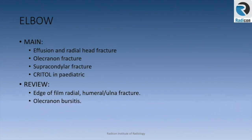Let's summarize elbow images for rapid reporting. The main abnormalities to look for are effusion, haemarthrosis and radial head fractures, olecranon fractures, supracondylar fractures in children, and assessment of ossification centers using the mnemonic CRITOL in pediatric films. Review areas include the edge of the film, radial, humeral or ulnar fractures, and olecranon bursitis.